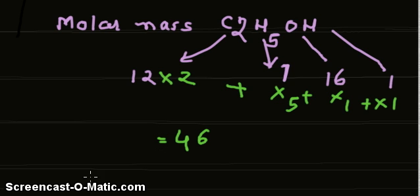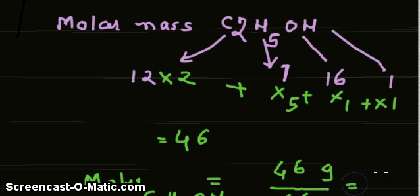So moles of ethanol equal to mass in grams, that is 46, divided by molar mass, which is also 46, equals 1 mole.